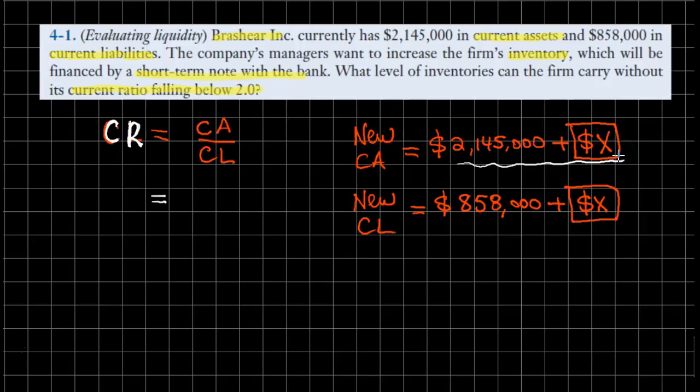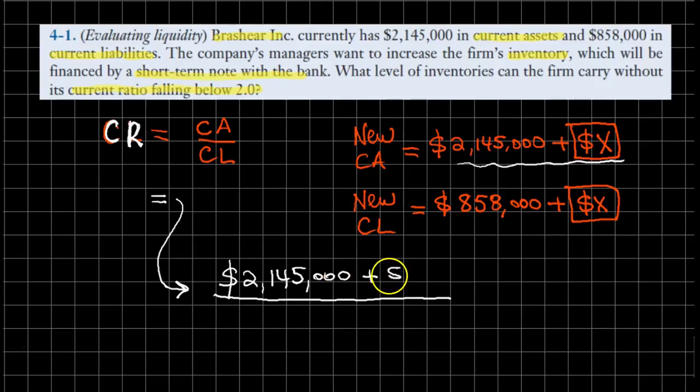I might need more space, so let me just write this ratio right over here. We have this new ratio which is $2,145,000 plus X dollars divided by new current liabilities which is $858,000 plus X dollars.